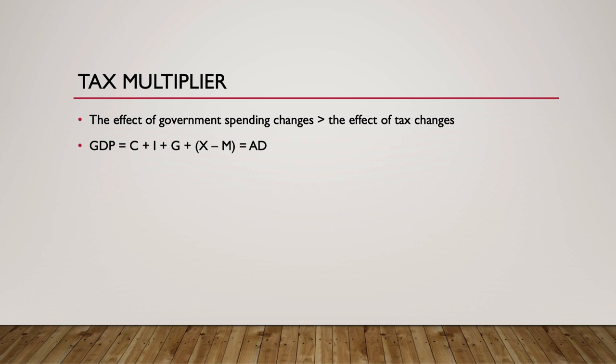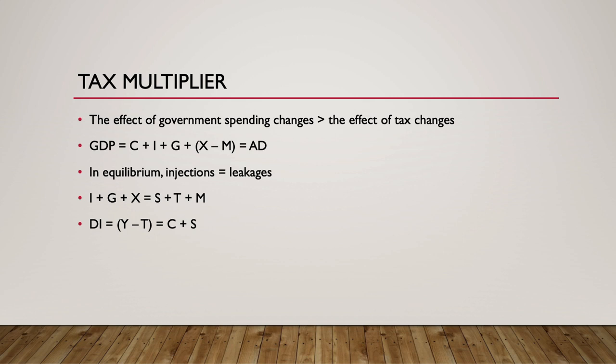Recall the equation for GDP: GDP is equal to C plus I plus G plus X minus M. And in equilibrium, injections equal leakages: I plus G plus X equals S plus T plus M. Injections are activities that increase spending in the economy, and withdrawals or leakages are activities that remove spending from the economy. Disposable income is equal to gross income minus taxes, which is equal to consumption plus saving.